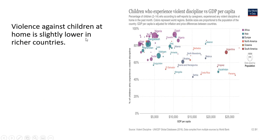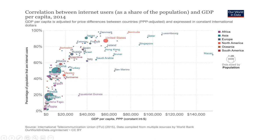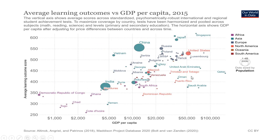Violence against children is slightly lower in richer countries. The share of population with improved sanitation versus GDP per capita shows a positive association. The correlation between internet users and GDP per capita is also positive. Average learning outcomes versus GDP per capita: higher GDP per capita, higher learning outcomes.